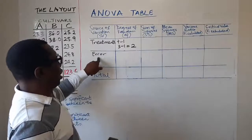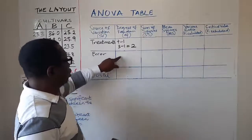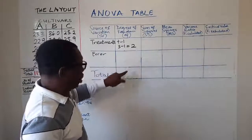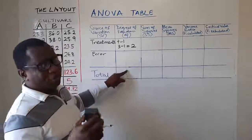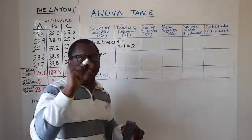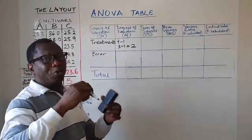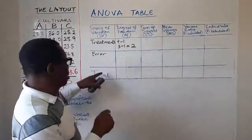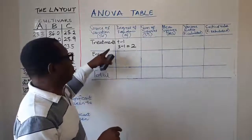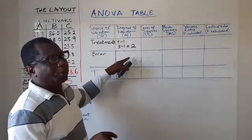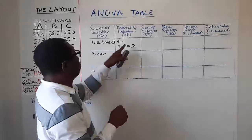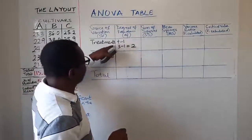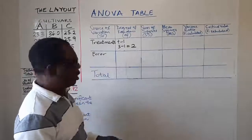Now for error, before you compute it you have to get that of total. If you recall that when we were computing the sum of squares in the last video, we computed the values for sum of squares for total and treatment before we could get error. So the same thing for degrees of freedom we have to compute degrees of freedom for treatment and total before we then get error.